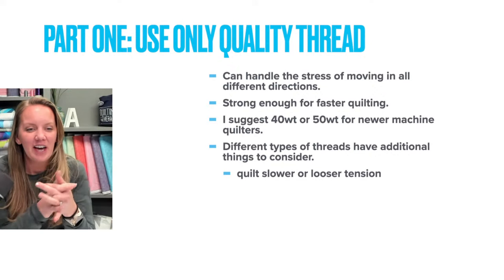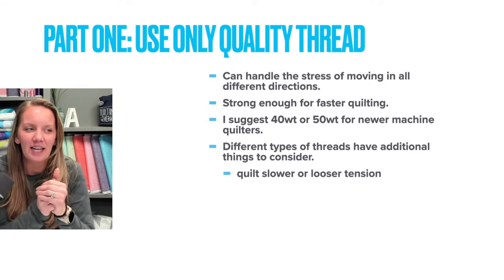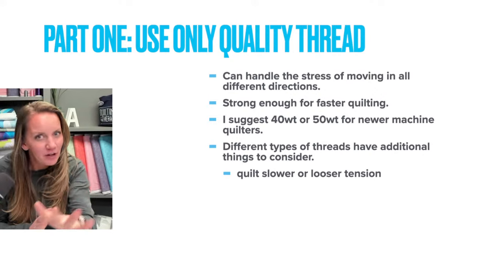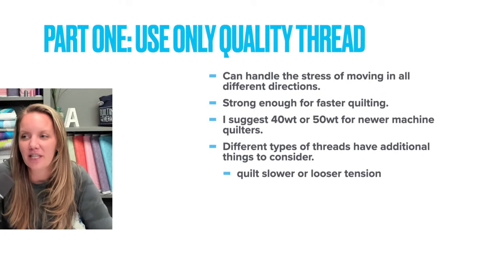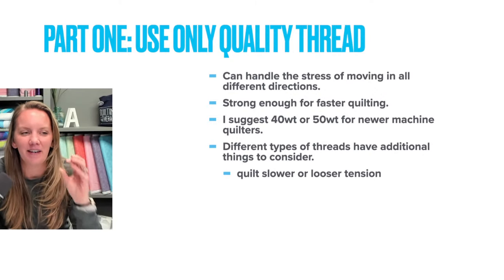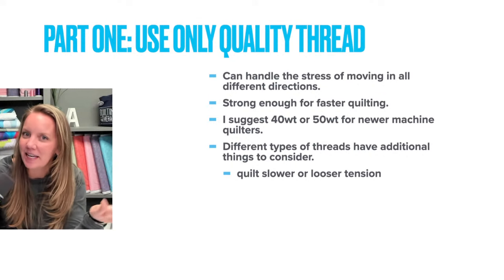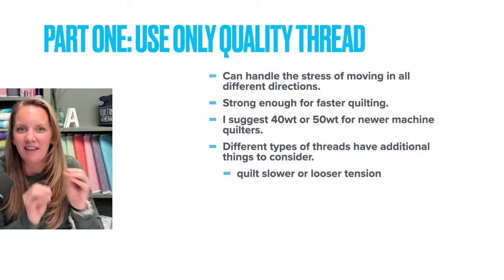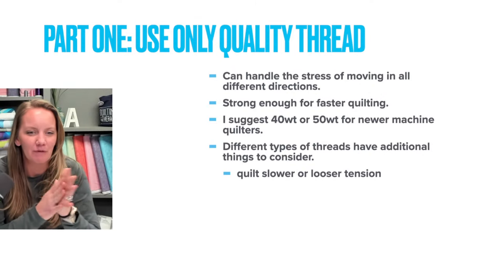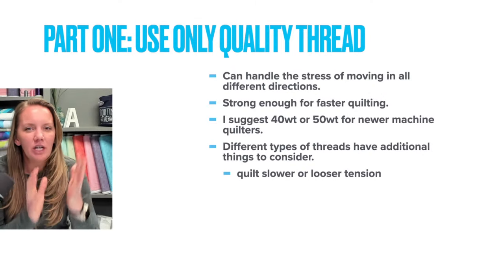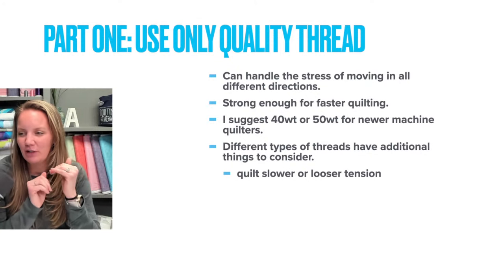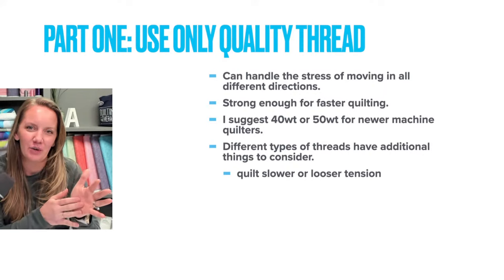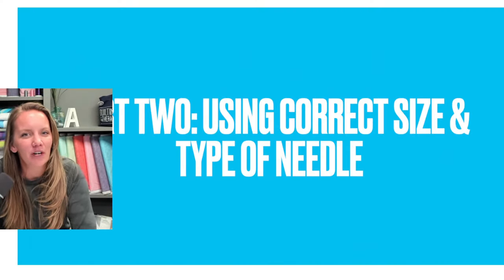I suggest sticking within the 40 to 50 weight for newer quilters if you're looking for a guideline, just because that seems to be the sweet spot — thin enough to blend in but not so thin or thick that you have to make changes for those finicky types of thread. When you're machine quilting and dealing with tension, always check that thread and make sure it's good quality. You can cut corners elsewhere, but I wouldn't cut corners on that.